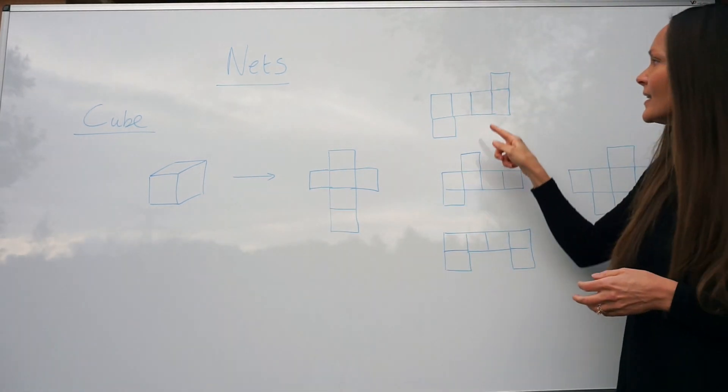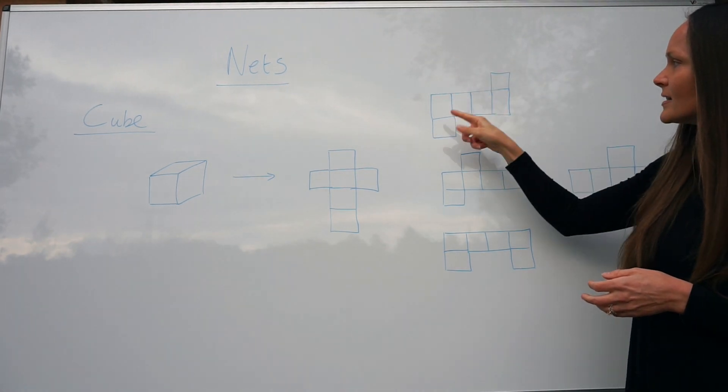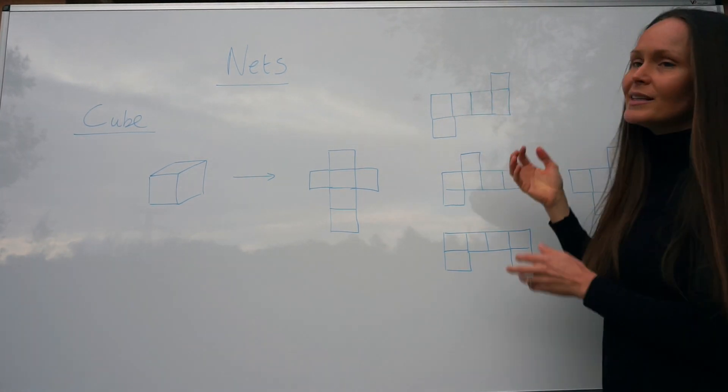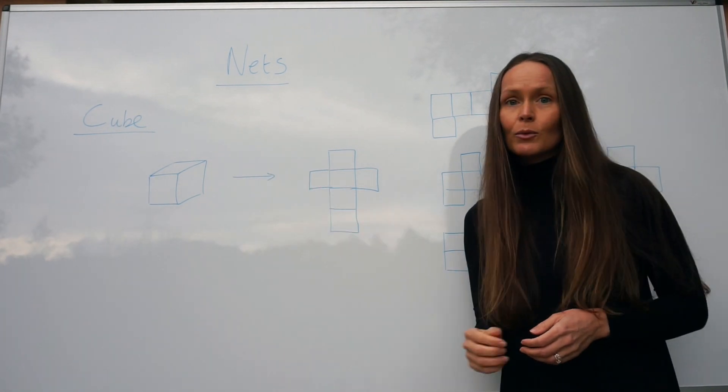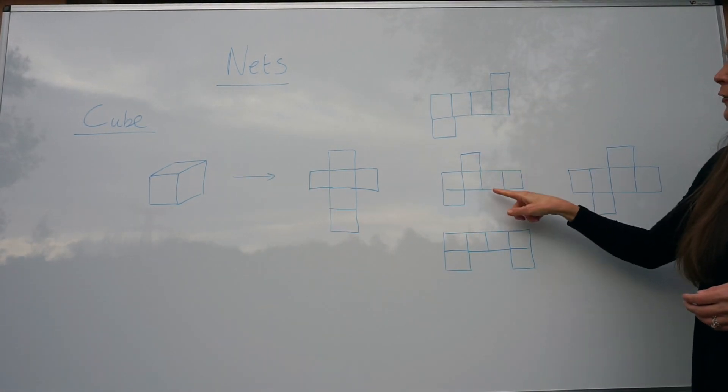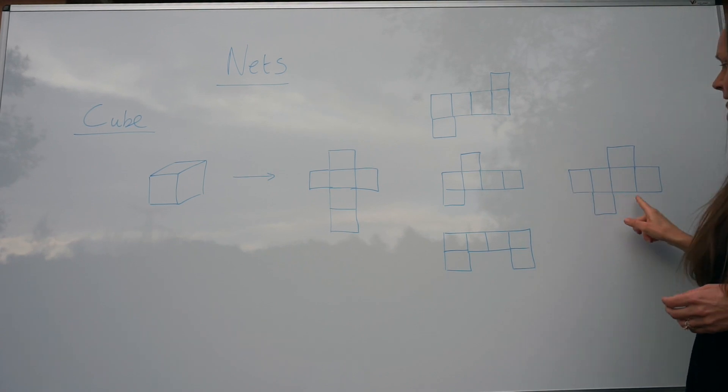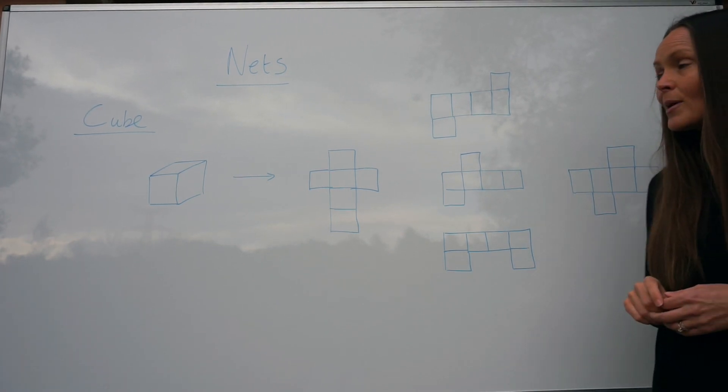Here, likewise, if you were to fold all of these sides back together it would give you a cube. So I've drawn a few different versions of the same net.